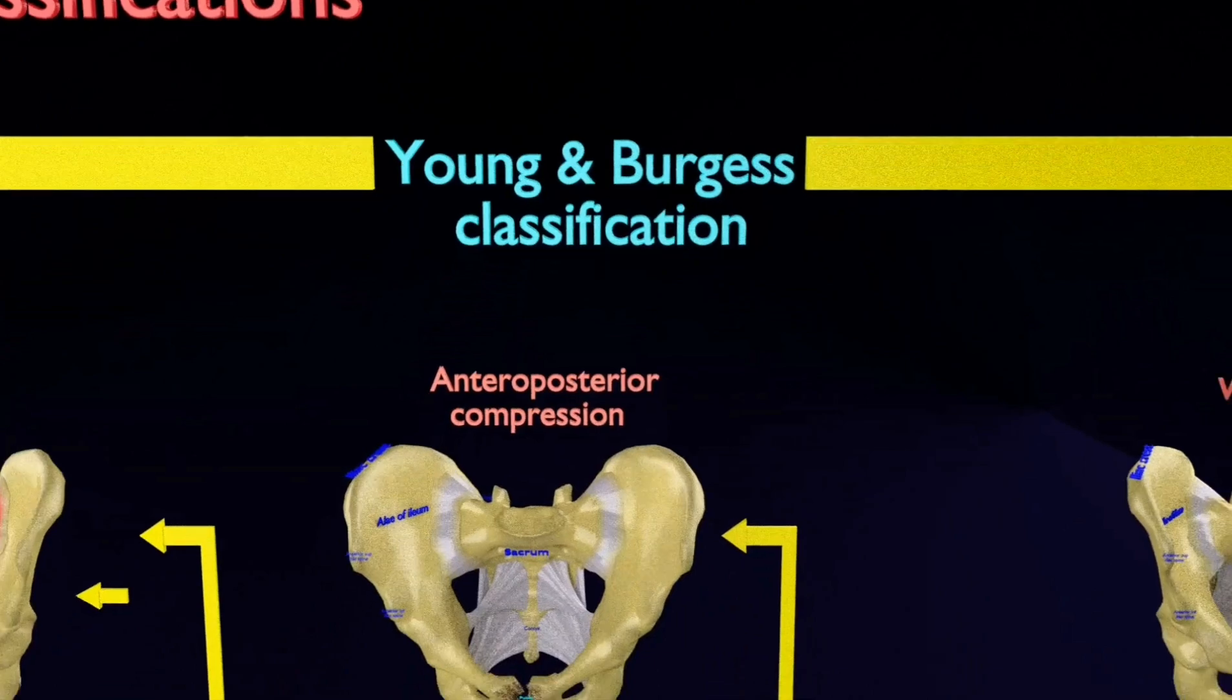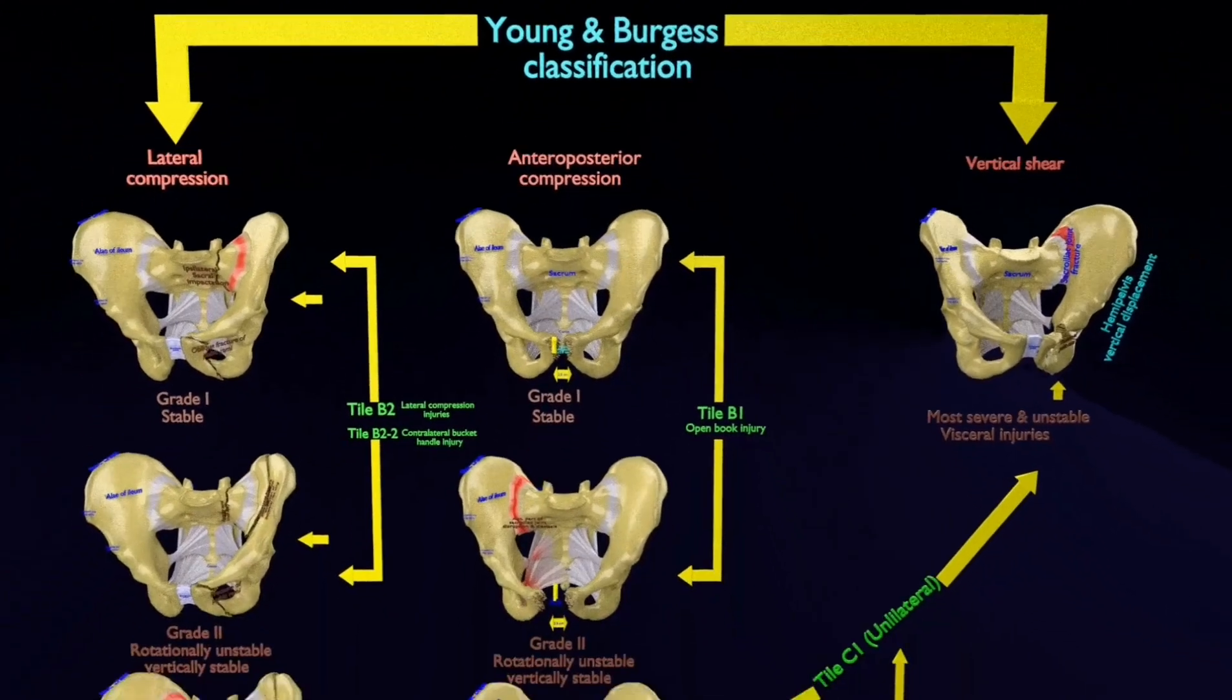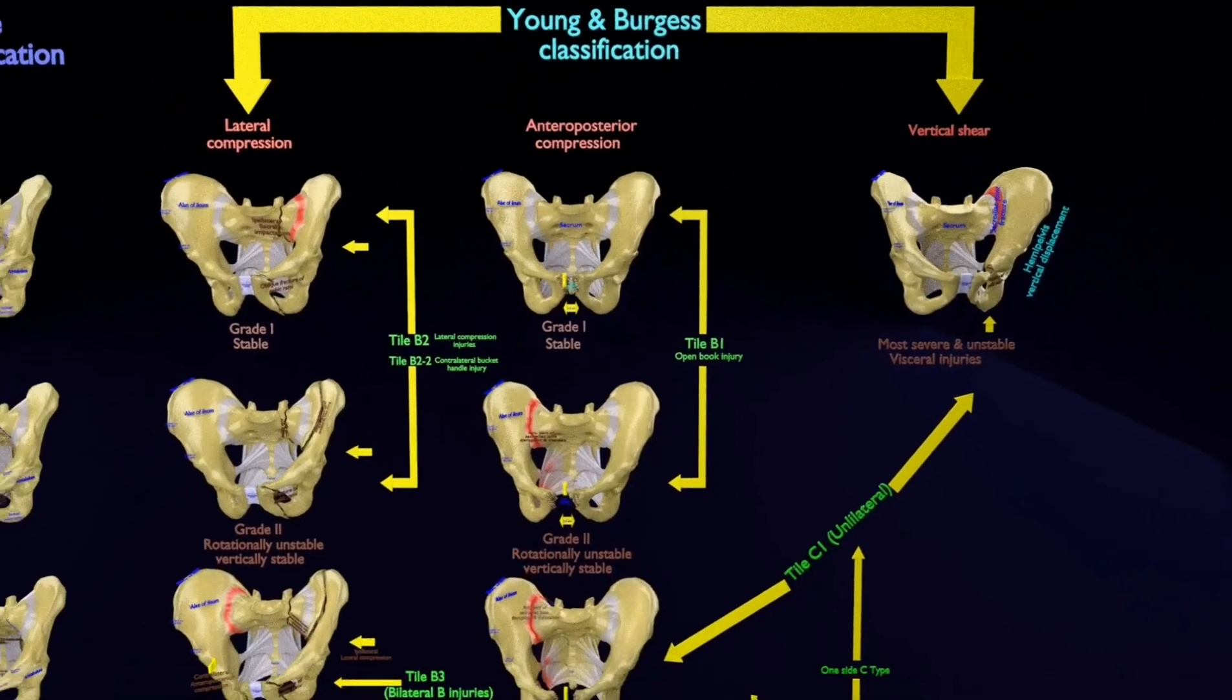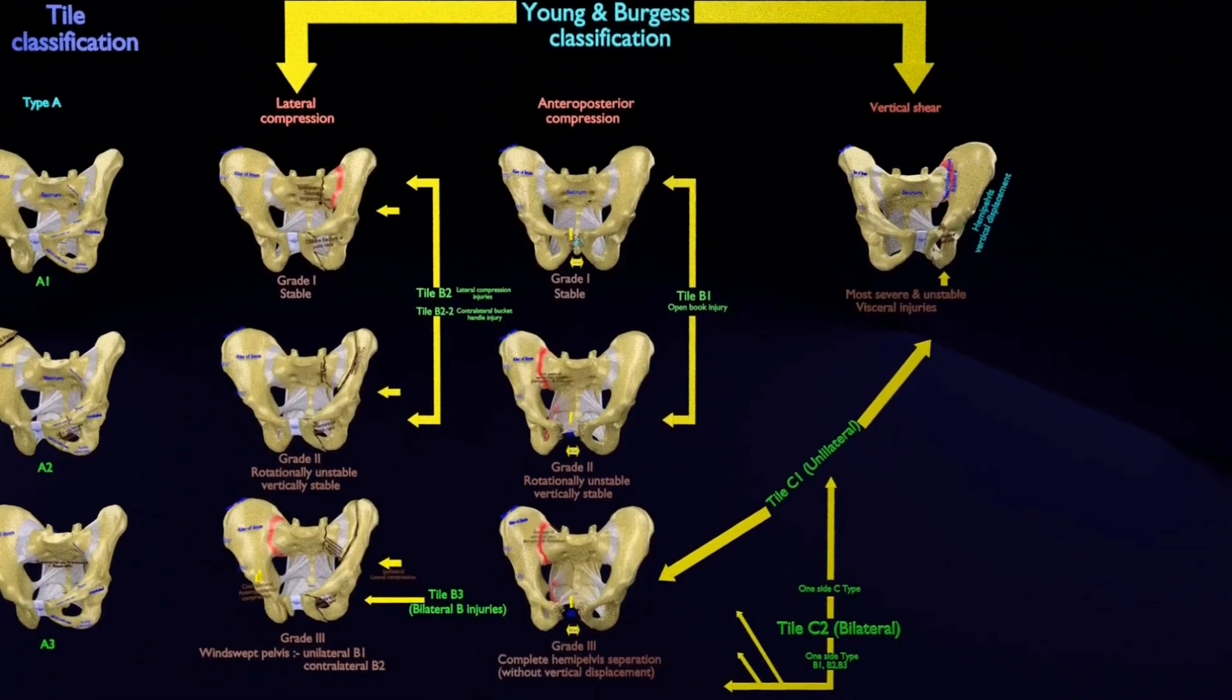First, I will speak in detail about Young and Burgess classification and simultaneously about the associated Tile classification categories, namely the Tile B and Tile C.